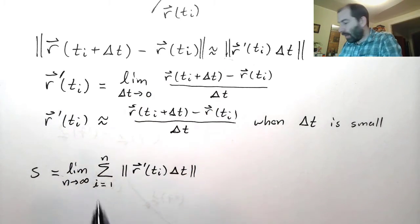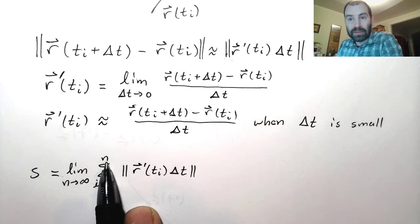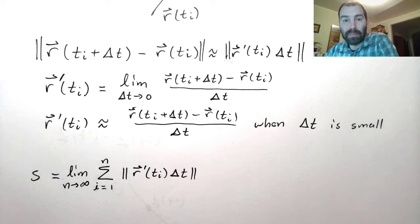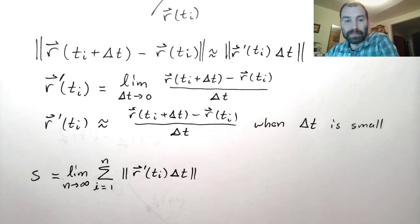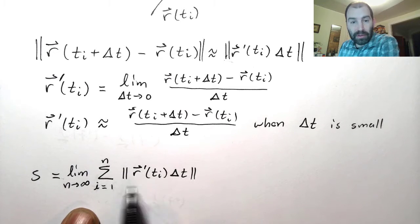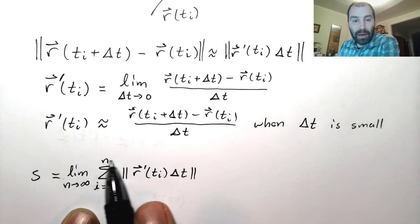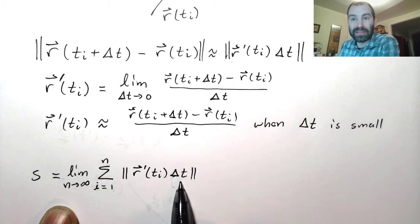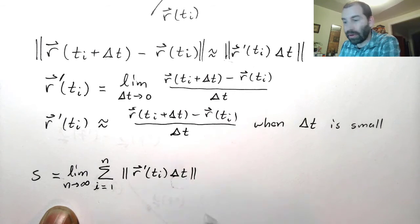So n here represents the number of subdivisions, which is related to delta t. As n gets large, delta t gets small. Now you should be familiar with things that look like this. If I take the sum, where n goes to infinity, and this quantity gets really small, this is an integral. What we're doing is we're computing an integral.